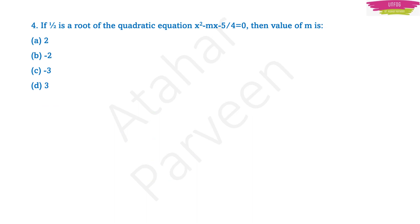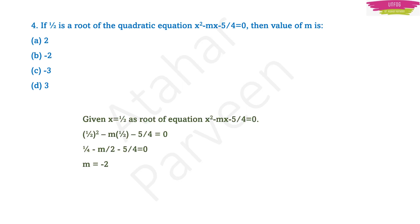Question number 4 is from quadratic equations. If 1/2 is the root of the quadratic equation x² - mx - 5/4 = 0, then the value of m is what? You have to calculate the value by writing x = 1/2. Just replace x with 1/2 wherever x appears. Then 1/4 - 5/4 gives -1, and -m/2 - 1 = 0 simplifies to m = -2. So option B is the correct answer. The main tip: just substitute the value of x and do simple mathematics.